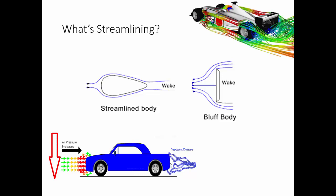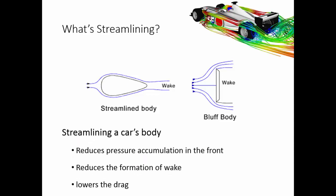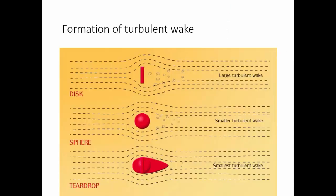As we expected, the streamlined body reduces the frontal pressure as well as the rear suction. Hence, a streamlined car body reduces pressure accumulation in the front, reduces the formation of wake, and finally lowers the drag. In general, the more the shape resembles the teardrop shape, the lower the drag and the higher the aerodynamic performance.